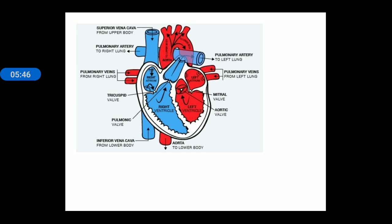Through the left atrium, the blood will move towards the left ventricle. Here there is a specific type of valve present — on the right side it is called the tricuspid valve, and on the left side it is called the bicuspid valve, also known as the mitral valve.